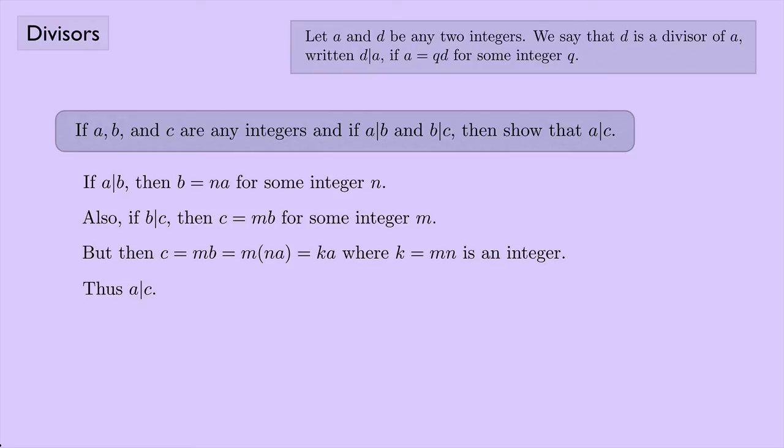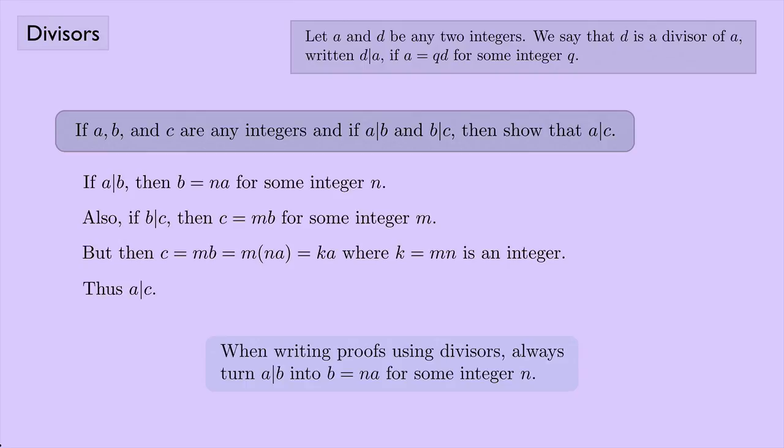In general, when proving statements involving divisors, always turn expressions like A|B into B = NA for some integer N. From there, the rest of the proof should be straightforward.